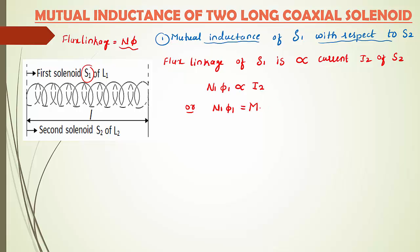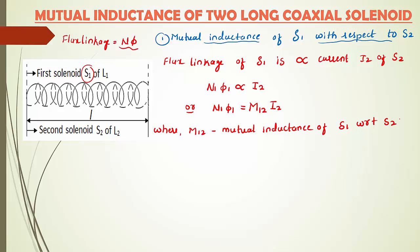Here M12 is the proportionality constant and is called the mutual inductance of solenoid S1 with respect to S2. Let us take this as equation number 1. Now I am going to write the magnetic flux due to S1 linked with S2.